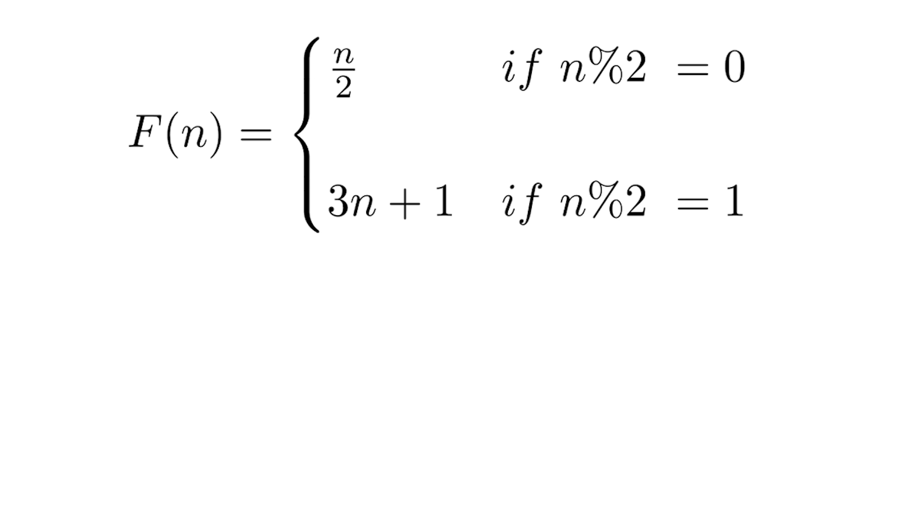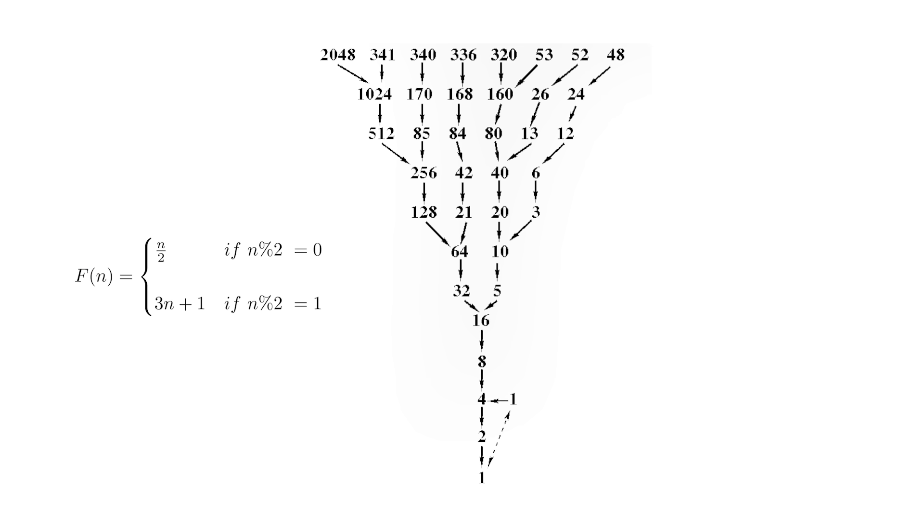A Collatz conjecture is all about a function f of n, which takes even numbers and cuts them in half, while odd numbers get tripled and then added to 1. Take any natural number, apply f, then apply f again and again. You eventually land on 1, for every number we've ever checked. The conjecture is that this is true for all natural numbers, positive integers from 1 through infinity.